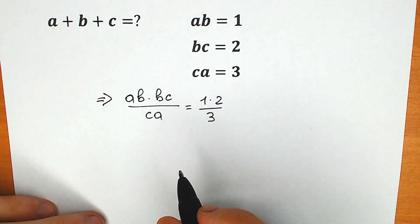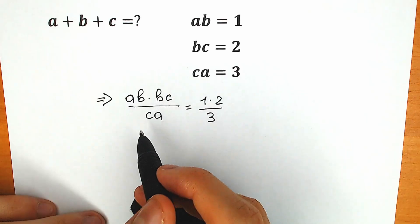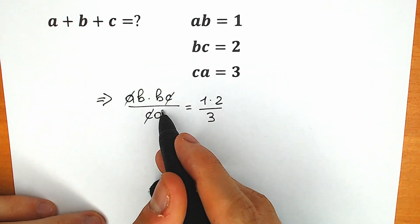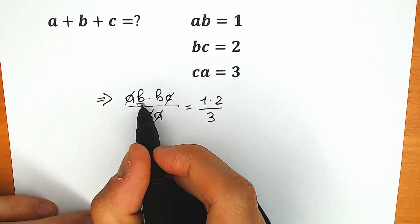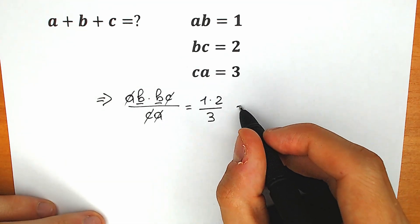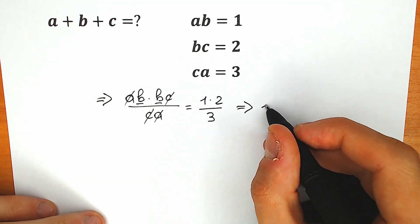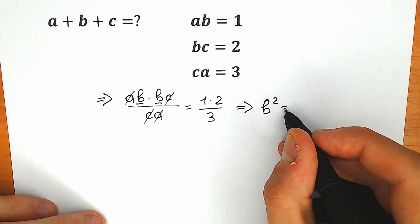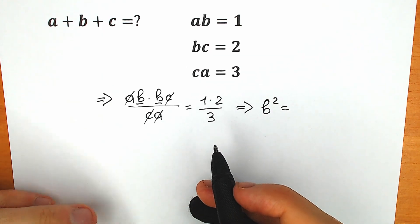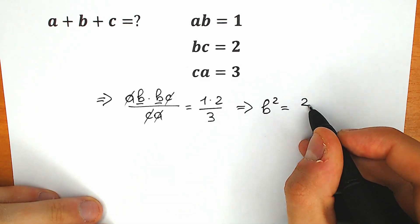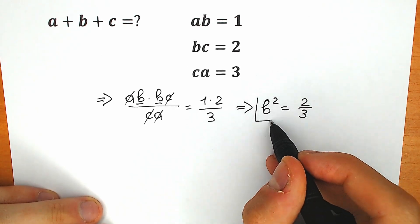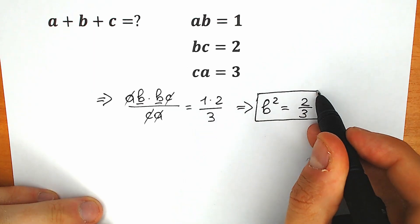Let's look closely at what we have on the left side. We can easily cancel c and cancel a. As a result we have only b times b, which equals b squared. So b squared equals 1 times 2 over 3, which is 2/3. This is an extremely important expression: b squared equals 2/3.